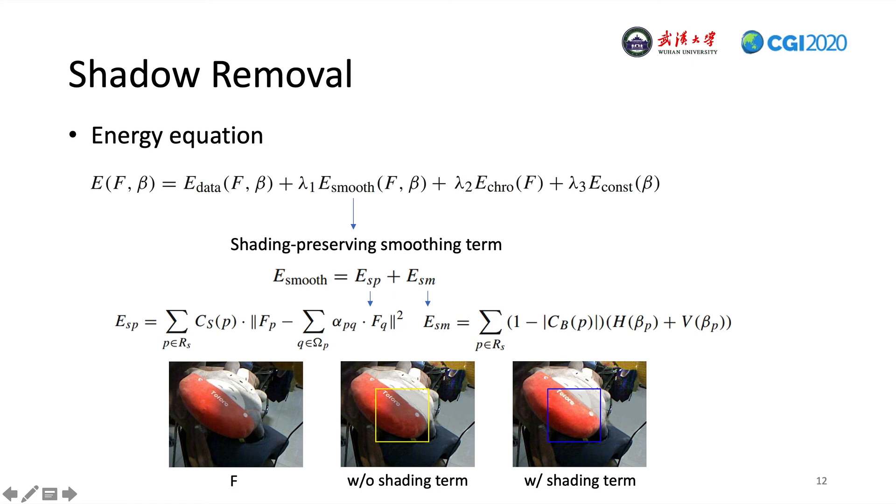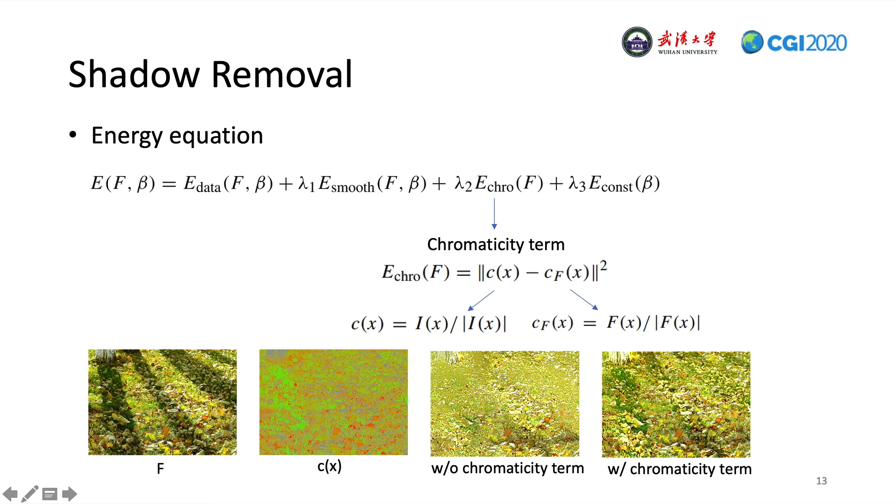The third term is the chromaticity term. We assume that chromaticity of the input image is not altered by illumination effects, such as shading and shadows. In this case, the chromaticity of the unknown shadow-free image F should be the same as that of the input image. So, we define the chromaticity constraint as this function. The comparison results are shown below. Using this term, the texture and chromaticity under the shadow regions are better recovered.